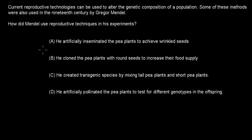Question 4 — the last question: Current reproductive technologies can be used to alter the genetic composition of a population. Some of these methods were also used in the 19th century by Gregor Mendel. How did Mendel use reproductive techniques in his experiments? A. He artificially inseminated the pea plants to achieve wrinkled seeds, B. He cloned pea plants with round seeds to increase their food supply, C. He created a transgenic species by mixing tall and short pea plants, or D. He artificially pollinated pea plants to test for different genotypes in their offspring. Pause and attempt the question.